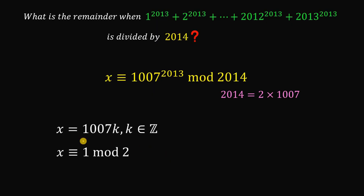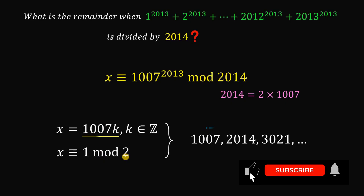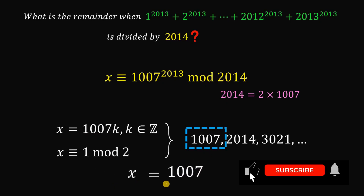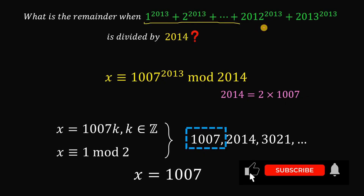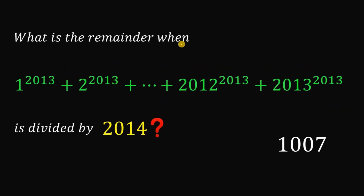Using these two results, we need to find the smallest x that satisfies both conditions: x is a multiple of 1007, and x ≡ 1 (mod 2). The multiples of 1007 are 1007, 2014, 3021, and so on. The smallest multiple of 1007 that is also 1 mod 2 is 1007. Therefore x = 1007, which is the remainder when 1^2013 + 2^2013 + ... + 2013^2013 is divided by 2014.